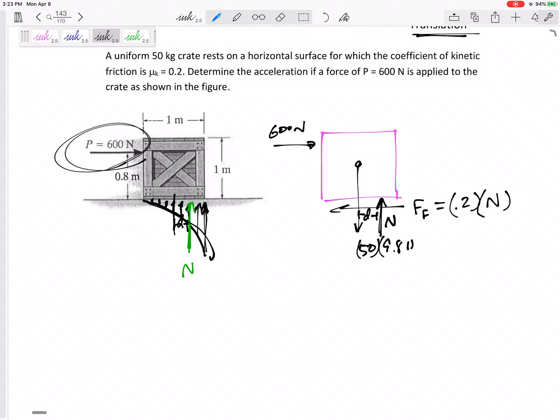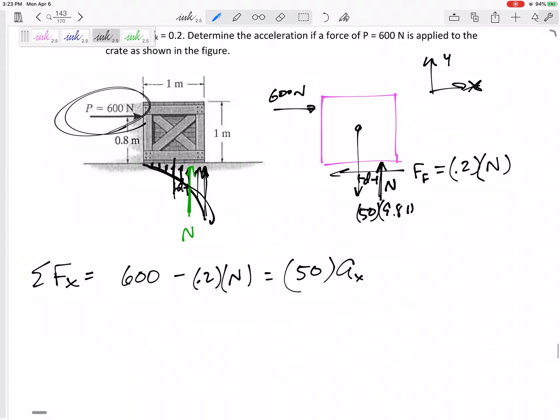Now, what are we going to do? We're still going to sum my forces in the x. Define your x. I like to define my axes according to the acceleration. It looks like this is just accelerating to the right. Sum of the forces in the x direction, 600 minus mu k times n equals m a in the x. Does it have some acceleration in the x? Yeah, I think it is sliding in the x. So it might have some acceleration.